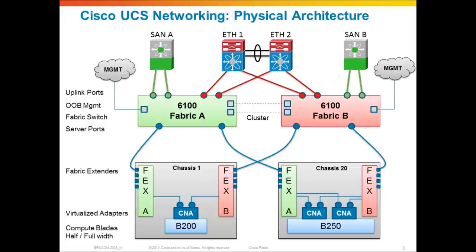Let's get started with a quick review of the physical architecture of Cisco UCS. UCS is really a single integrated system of switches, cables, adapters, and servers wrapped into one common management umbrella provided by UCS Manager, which runs on the Fabric Interconnect. At the very center of the switching architecture is the Fabric Interconnect, the 6100 shown here. This is a wire rate 10-gig switch, which provides 10-gig connectivity for all of the chassis housing all of the servers.